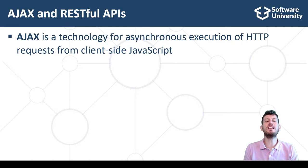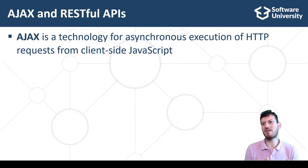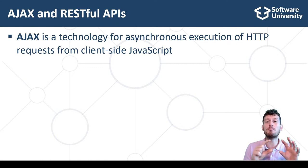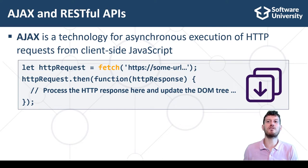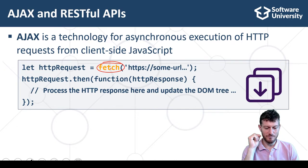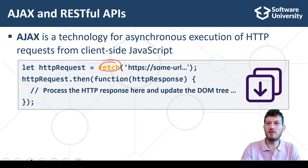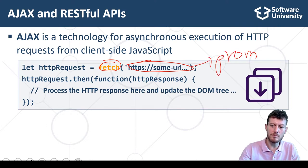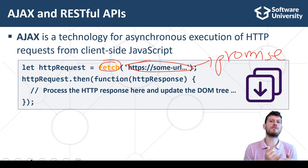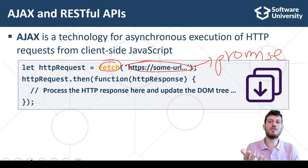AJAX enables building interactive single-page apps where the content of the page interactively changes without refreshing the page. Developers can retrieve data from a URL without having to do a full-page refresh, enabling a web page to update just a part of a page without disrupting what the user is doing. This is an example of how JavaScript code can download server-side resources over HTTP using the Fetch function. The Fetch function takes a server-side resource URL as input and returns a promise, which will be resolved when the resource is downloaded or an error occurs. This code will invoke asynchronously a simple HTTP GET request.